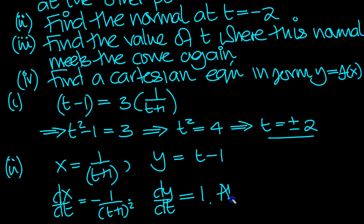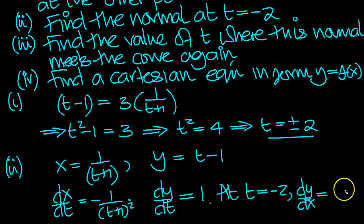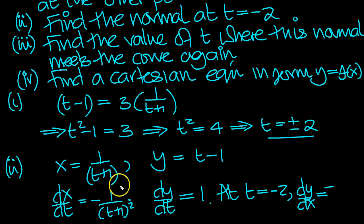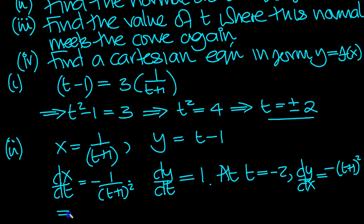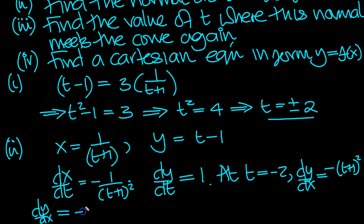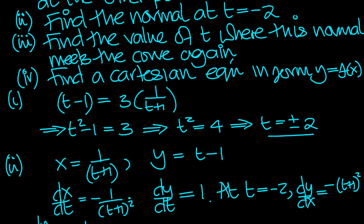At t equals minus 2, dy/dx equals dy/dt over dx/dt. Taking 1 over that expression brings the denominator up to the top, giving us t plus 1 squared. At t equals minus 2, that's minus 2 plus 1 equals minus 1, and minus 1 squared is 1, but with the minus sign, so dy/dx equals minus 1. Therefore the normal has gradient 1.